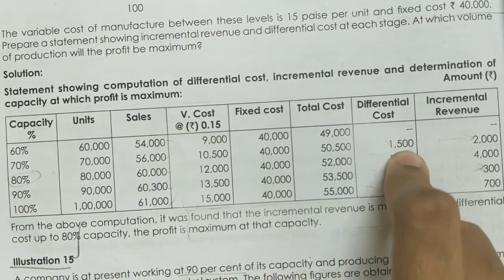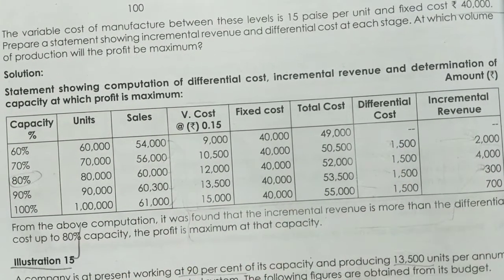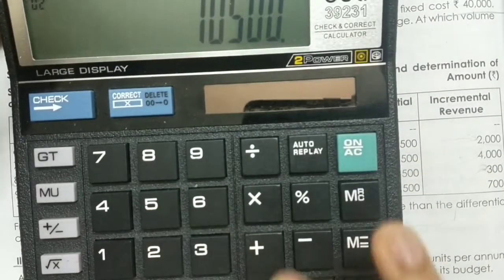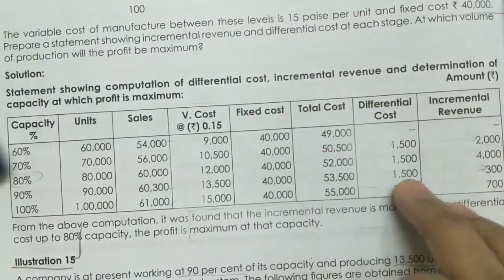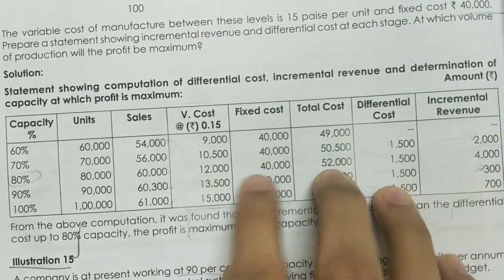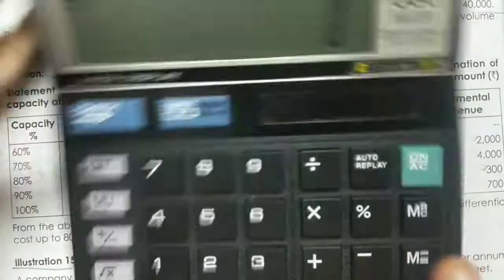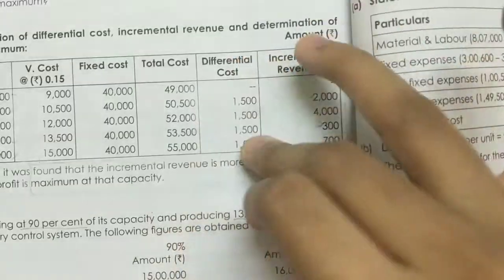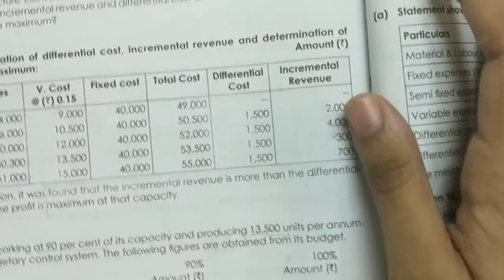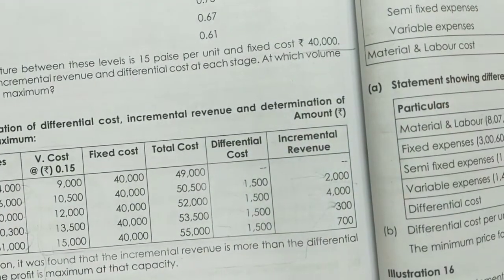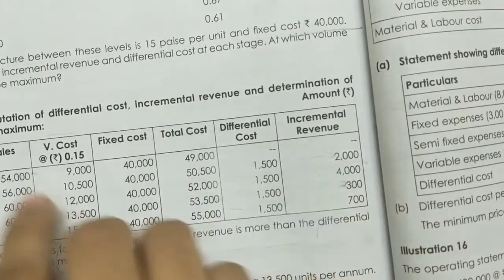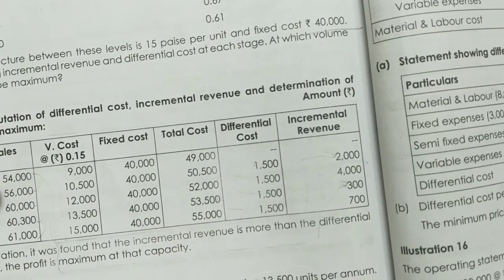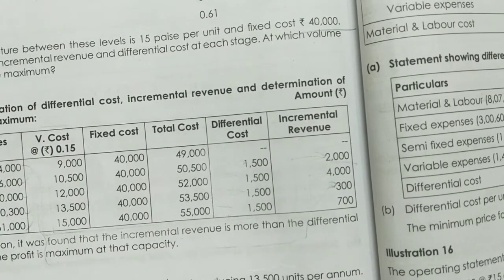We have to give the difference at 70% of the level. That is 10,500 minus 12,000; 12,000 minus 10,500 gives a difference of 1,500 again. Then 12,000 minus 13,500 gives 1,500. The incremental revenue is the difference between the sales: 54,000 minus 56,000 gives 2,000.